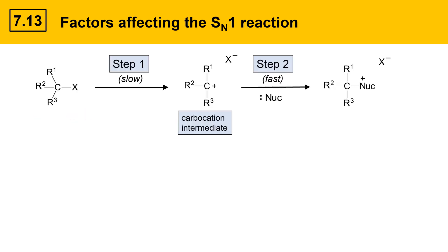It contains an alkyl halide, and the alkyl halide leaving group leaves in the first step, which is the slow step. That generates a carbocation intermediate. The nucleophile attacks the carbocation in the second step, and that's the fast step, to give substitution products.